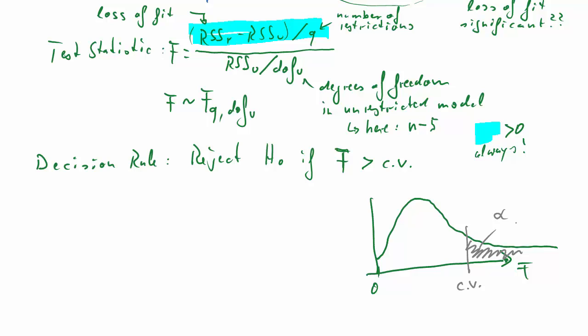And the critical value will be determined by an alpha, a type 1 probability. And if our F-test exceeds that critical value, we will reject.